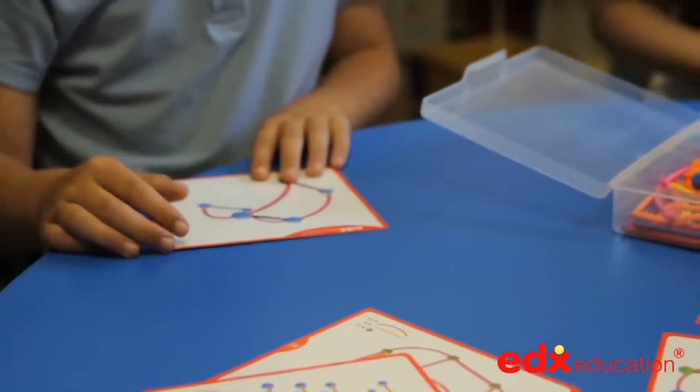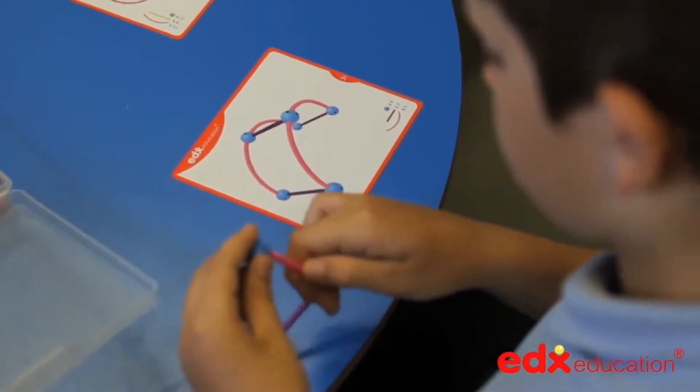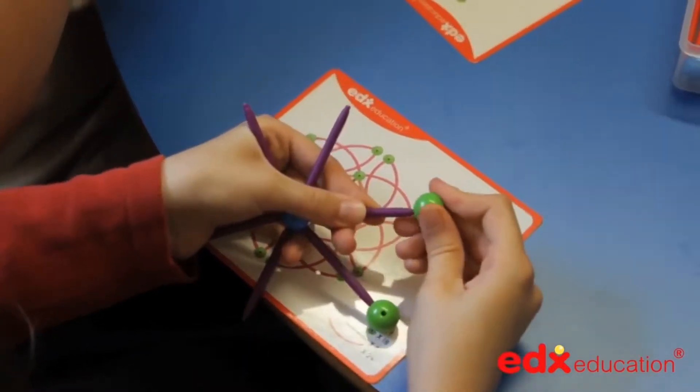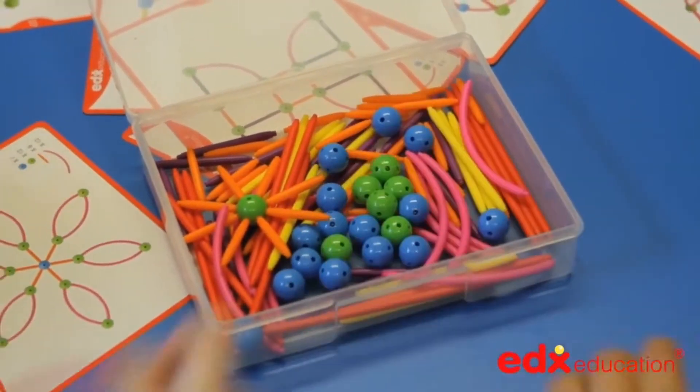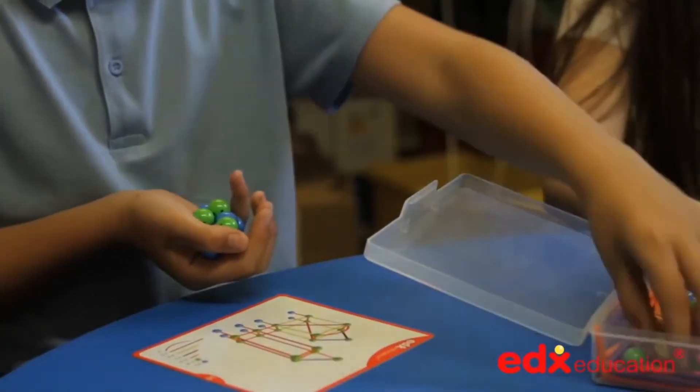Building with the Skeletal Starter Set requires children to select rods and fit them into holes in plastic balls. Rods and balls are color coded, making them easy for children to select when building.